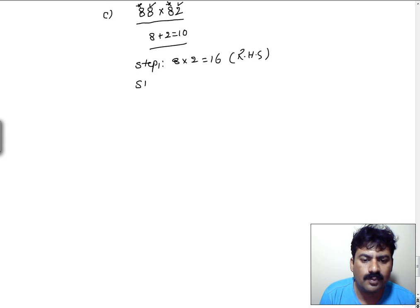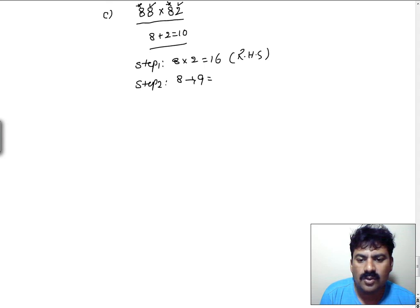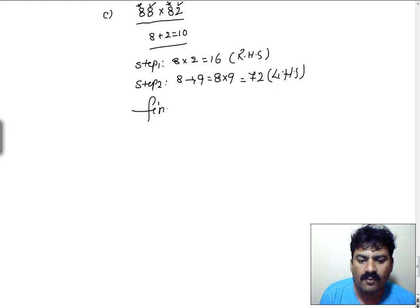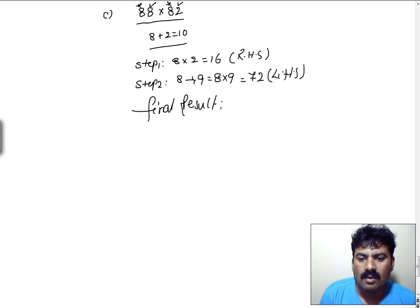In step 2, for the 8 the next digit is 9. Do the multiplication of 8 and 9 — that equals 72, which is the LHS part of the answer. The final answer is 7216.